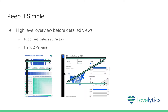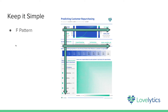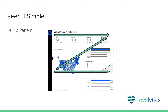The first best practice is to keep it simple. We want to present high-level overviews to the audience before drilling into the details, keeping the most important metrics at the top. Use the F or Z pattern in the dashboard to allow the audience's gaze to easily follow the information. The F pattern places the most important information on the top left, then guides users to read across the visualization before moving down to the next portion. The Z pattern guides the user to interact with the dashboard in a Z-shaped manner.